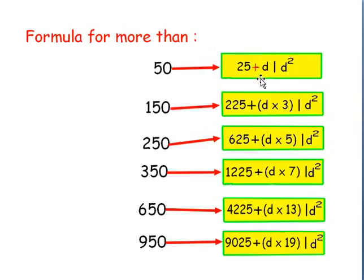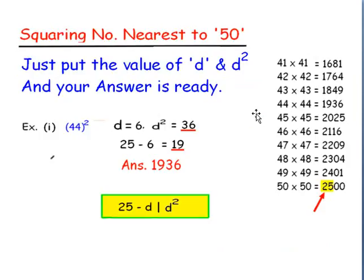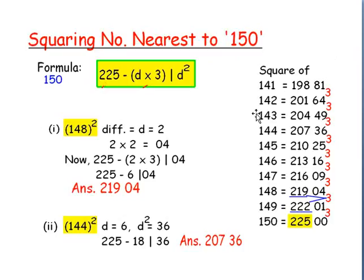Now, if the numbers are more than 50, in place of the minus sign we will write a plus sign. So for numbers nearer to 50 but more than 50, we write 25 plus D and then D square. For numbers nearer to 150 but more than 150, we write 225 plus 3 into D and then D square, and so on. Now let us know in detail how to find the square of numbers nearest to 50. Just put the value of D and D square and your answer is ready. For example, 44 square: its difference from 50 is 6, so D square is 36. Write 36, and 25 minus 6 is 19. So the square of 44 is 1936. In the table on the right side you can see the square of all numbers nearer to 50 and just greater than 50.